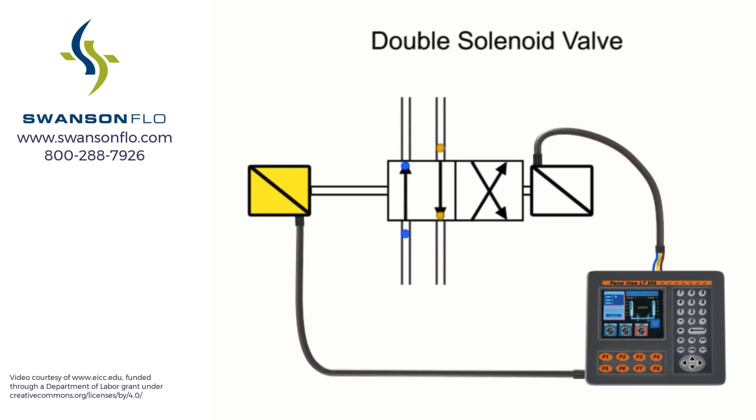Even if the first solenoid is de-energized, the spool remains shifted. This is because there is no spring to return the spool to its original position.